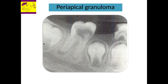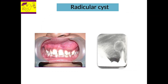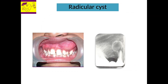A tooth with a wide carious lesion without any clinical signs and symptoms, but radiographically showing a well-circumscribed periapical radiolucency of less than 0.5 cm, is termed a periapical granuloma. A long-standing periapical granuloma or periapical abscess could undergo transformation to a fluid-filled pathological cavity, which is called a radicular cyst or dental cyst.